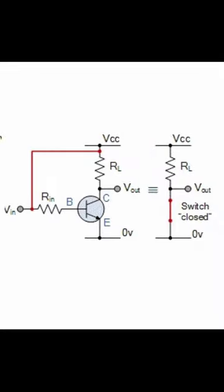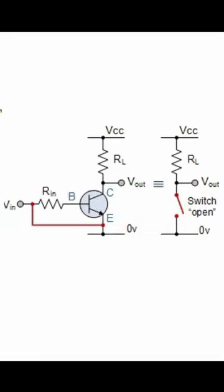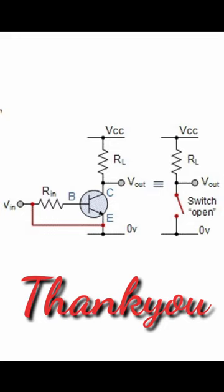When the control signal is high, current flows into the base of the transistor, which allows current to flow from the collector to the emitter, turning on the load. When the control signal is low, no current flows into the base, and the transistor acts like an open circuit, turning off the load.